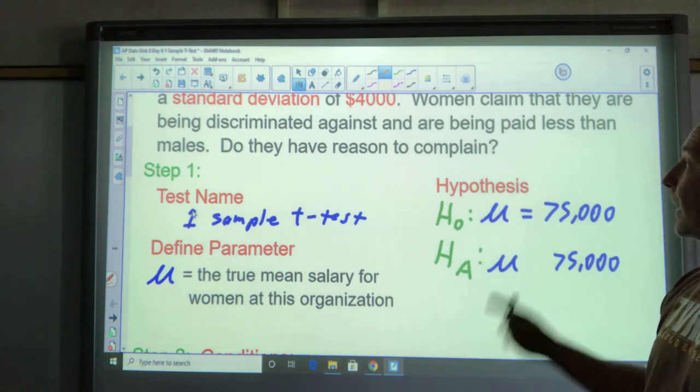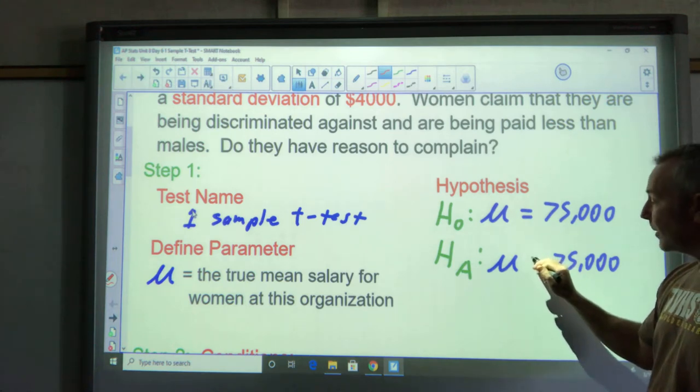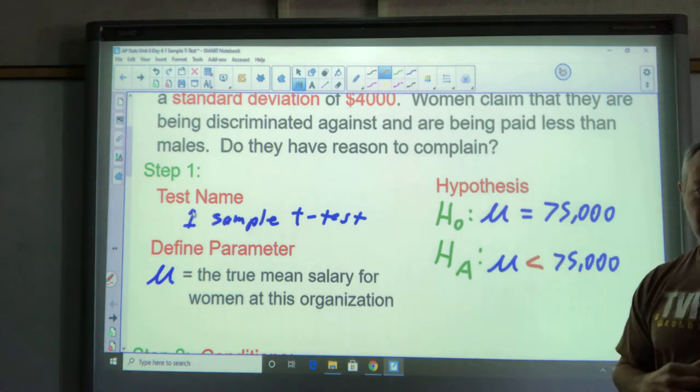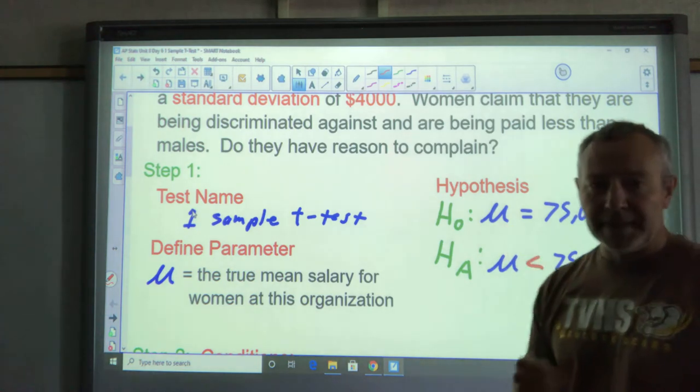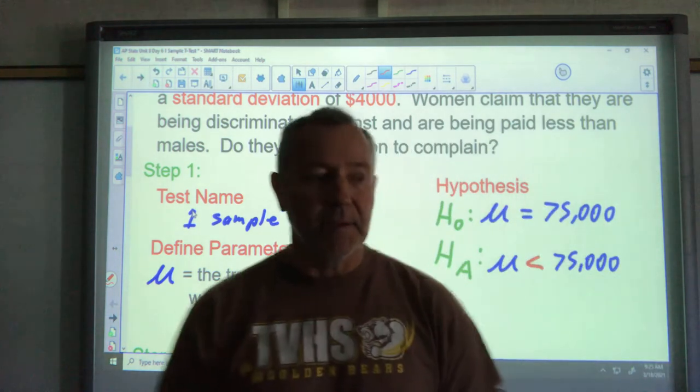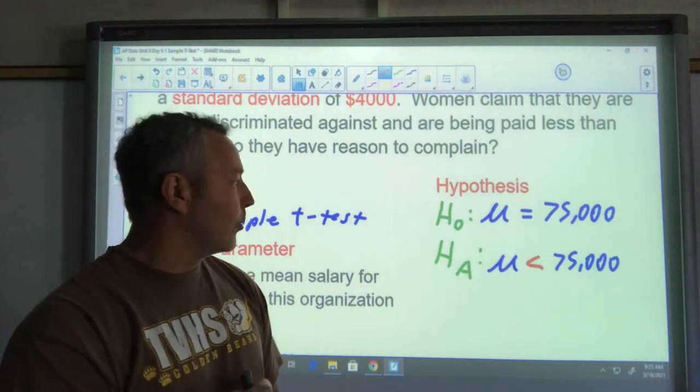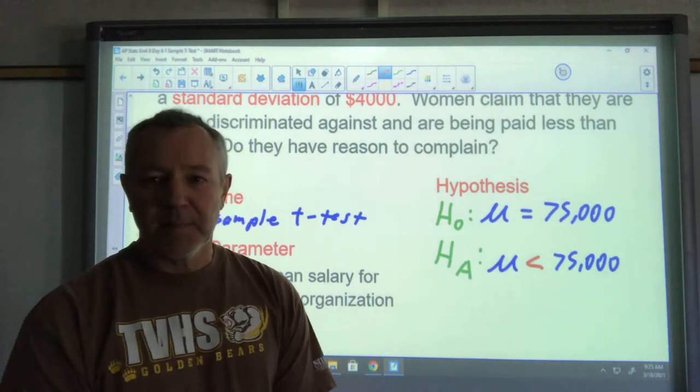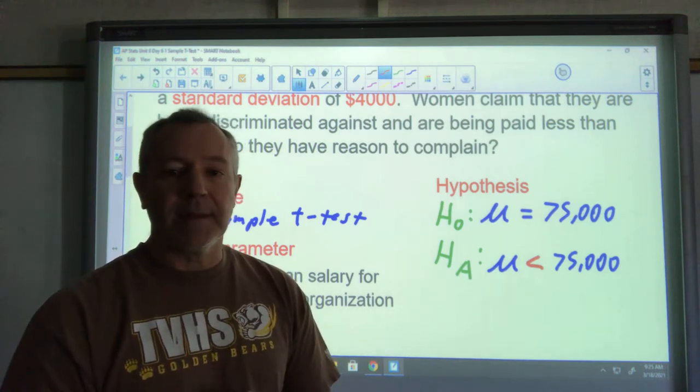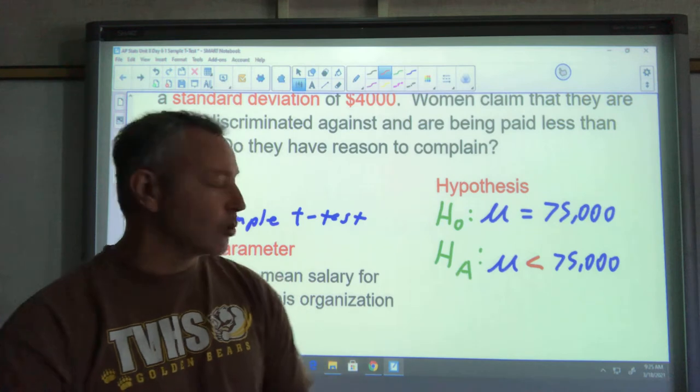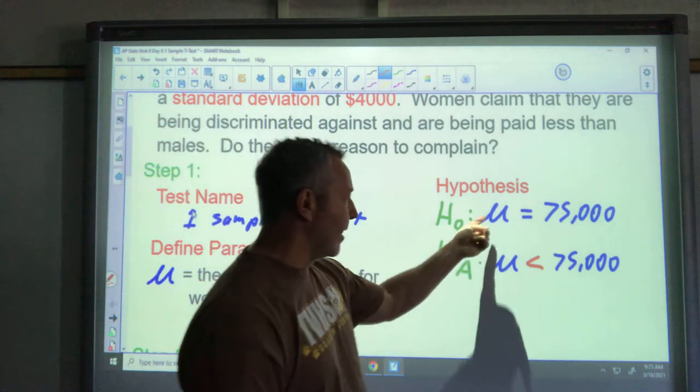In this case we think the women might be being paid less. We think the mean salary for women might be less than 75,000. Important things to note, this is the mean salary for men, we know that. That mean symbol indicates that we've checked the population, we know the true mean salary. We're wondering about the mean salary of women though, that's what we're doing here and that's what this is going to represent.